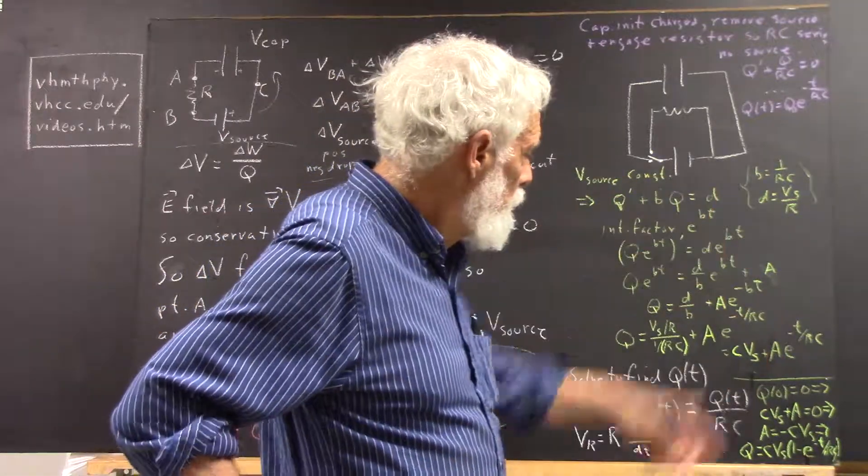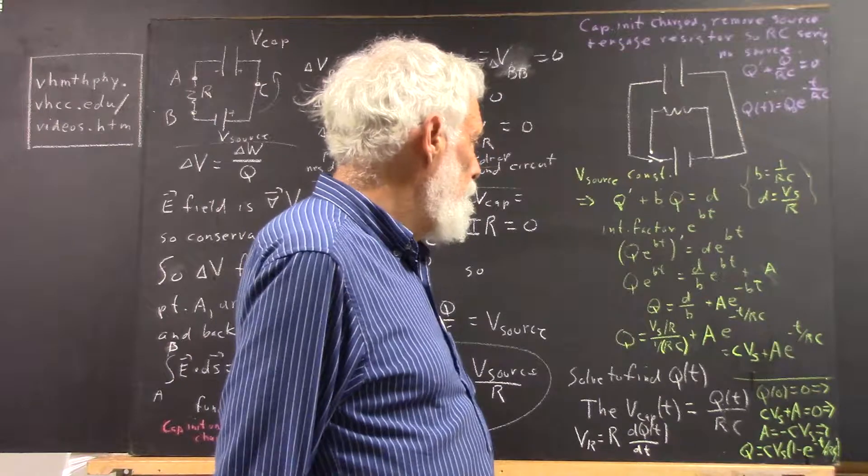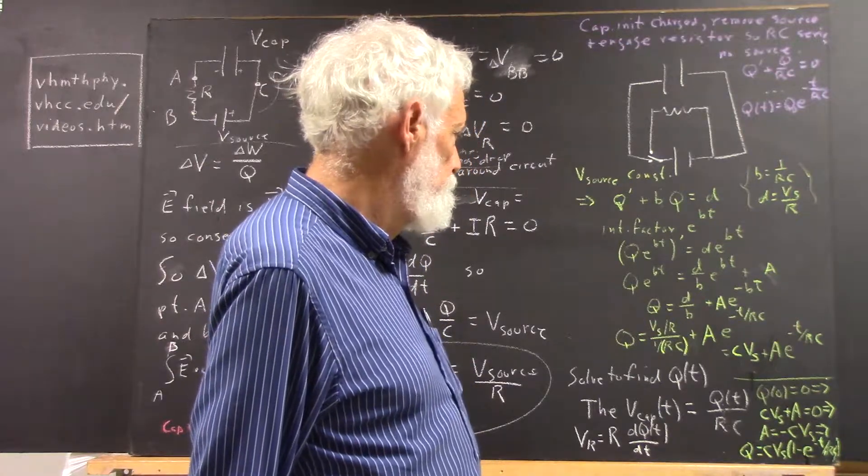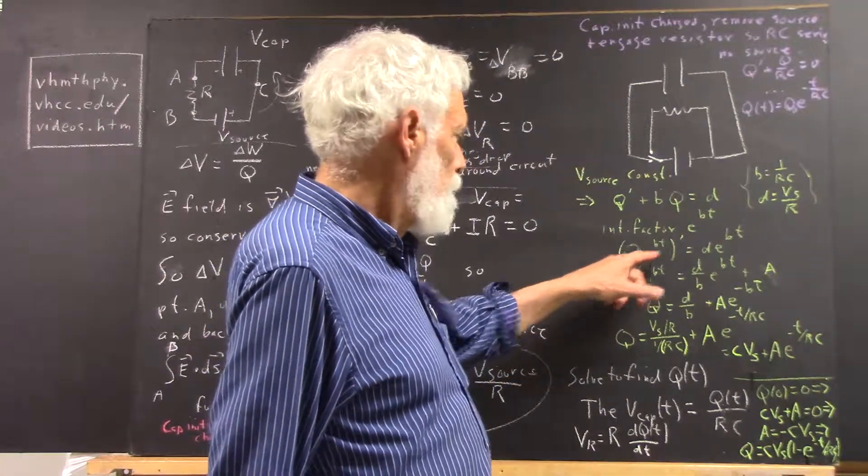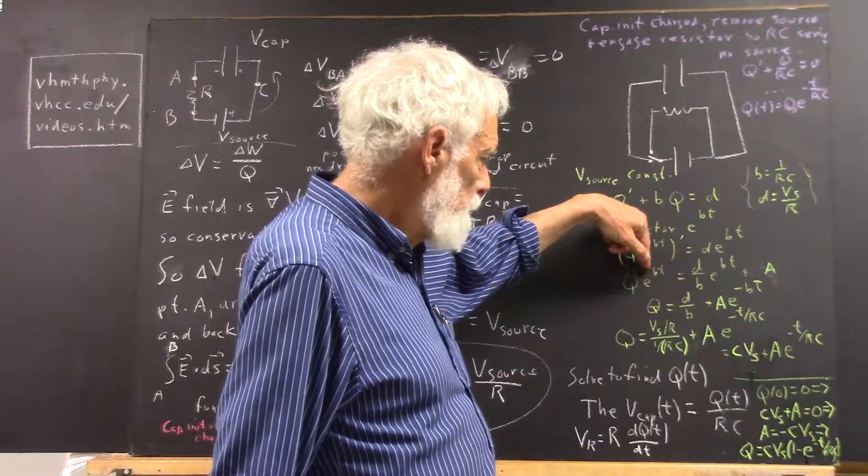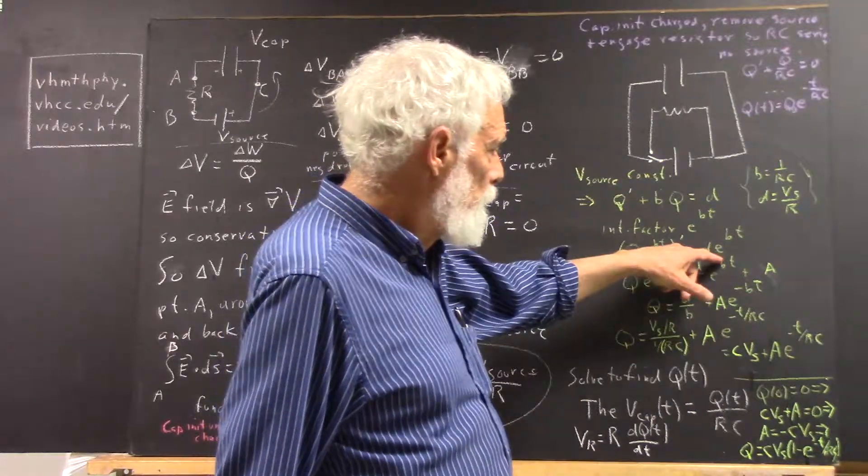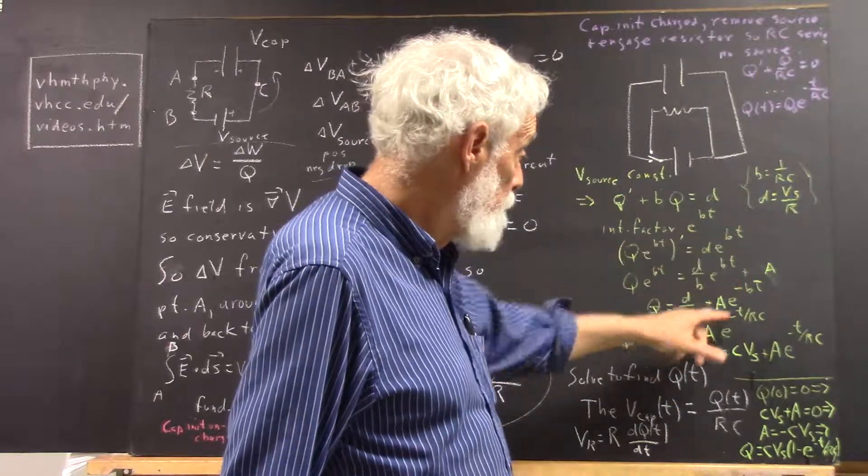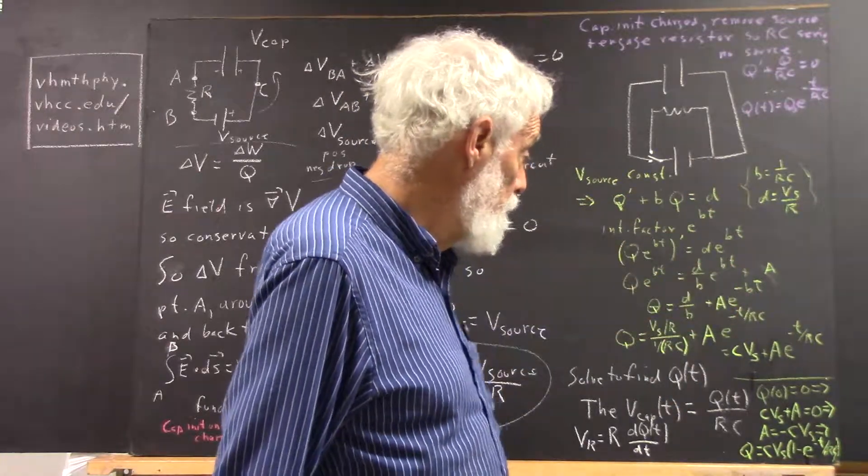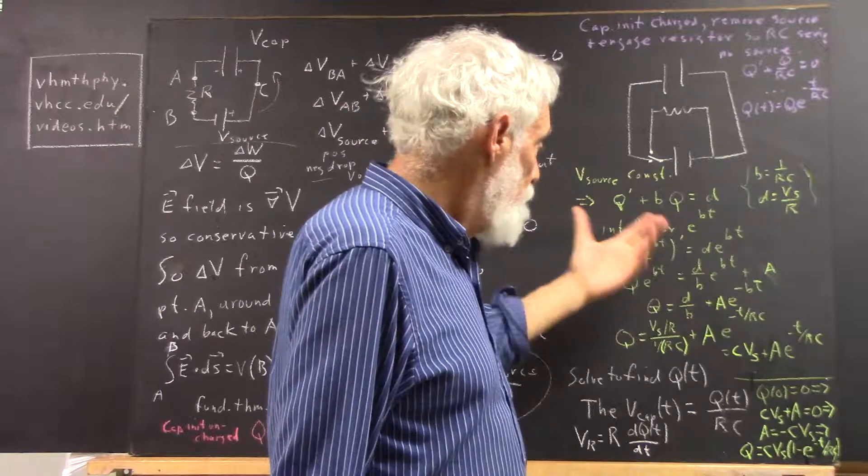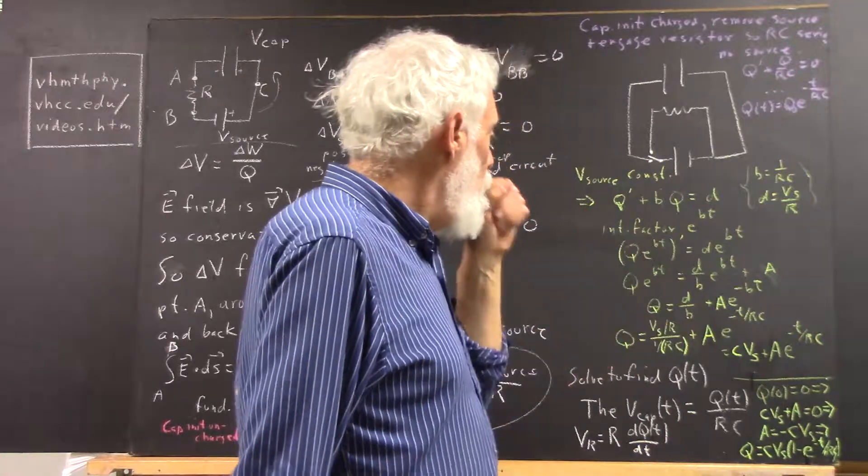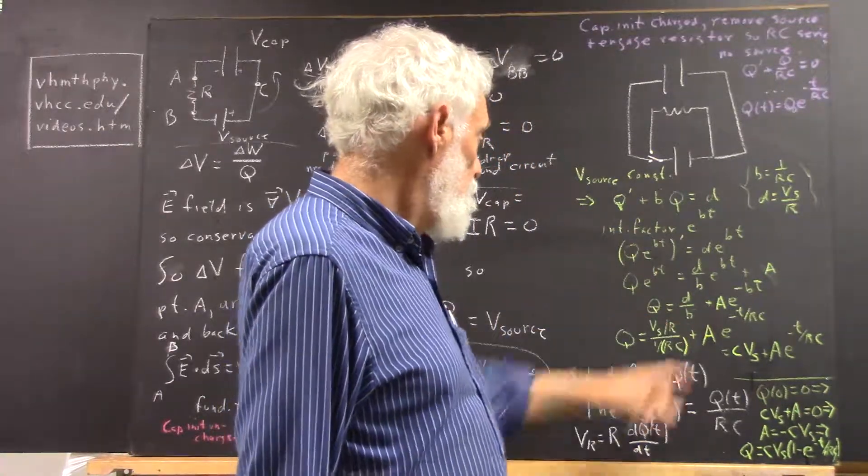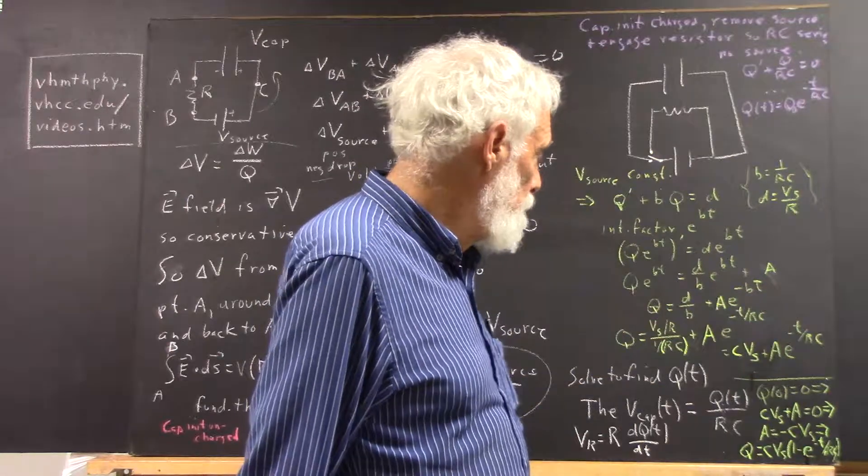If we integrate both sides of this, the integral of (q e^(bt))' is q e^(bt). Integrating e^(bt), we get 1/b e^(bt), so the integral of this side is d/b e^(bt). q is then d/b + a e^(-bt).